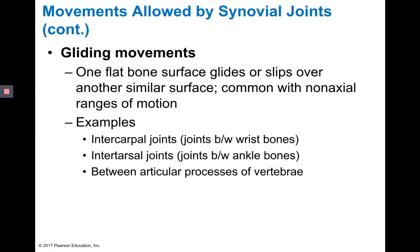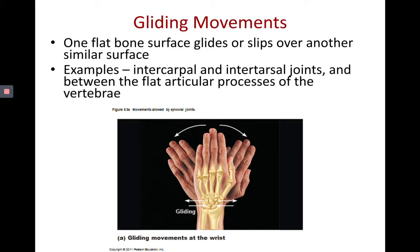Gliding movements are when flat bone surfaces glide or slip over another similar surface. This is common with non-axial ranges of motion, occurring between the tarsal and carpal bones, and some between the articular processes of vertebrae. Between wrist bones is called the intercarpal joints, and between ankle bones, that's intertarsal — these are where we see non-axial gliding movements.